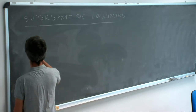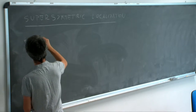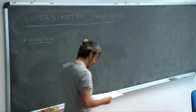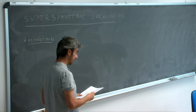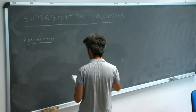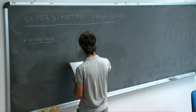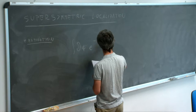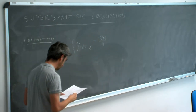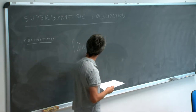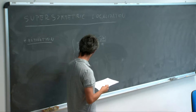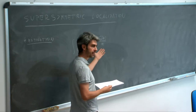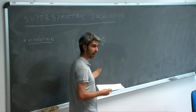Let me start with a little bit of motivation. We're interested in quantum field theories, and at least in principle all the information about the quantum field theory is contained in the Euclidean path integral. Roughly this is an integral over all field configurations, weighted by e to the minus the action divided by h-bar. This object is an infinite-dimensional integral because we integrate over all field configurations on some spacetime manifold. Even though formally this contains all the information we want, in practice it is too hard to solve in general.